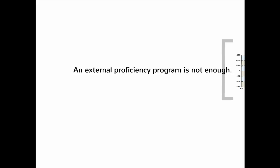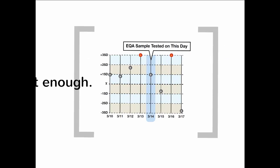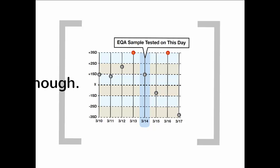While external proficiency programs also play an essential role in assuring quality, they are not enough when used alone. EQA schemes typically involve testing unknown samples on a monthly or biweekly basis and can only provide information about the testing performed on that particular assay run on that particular day.